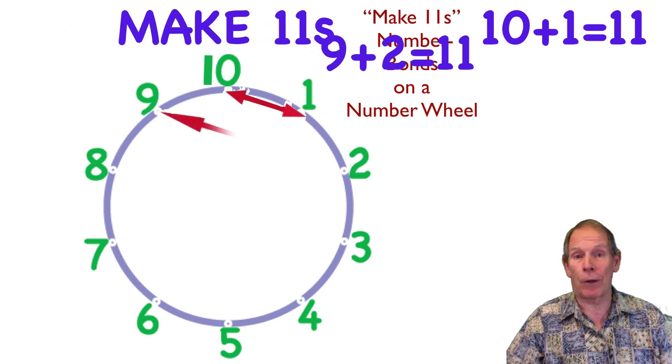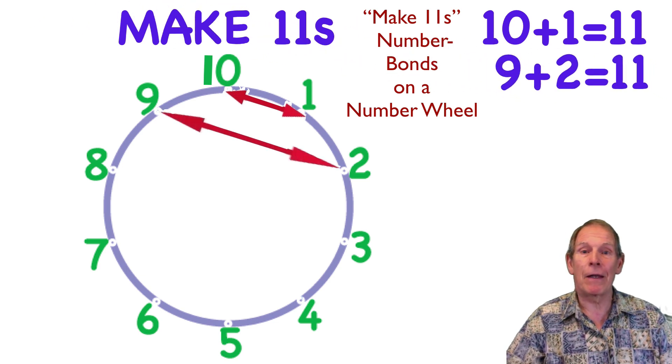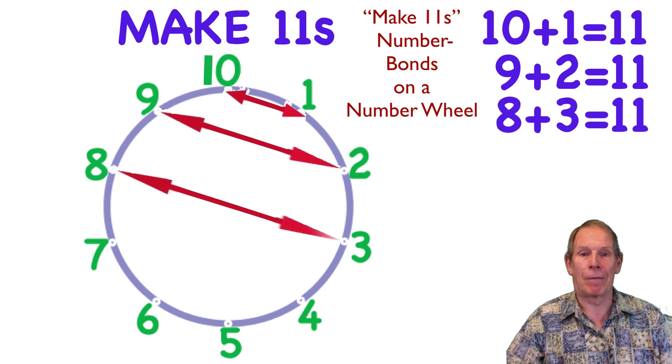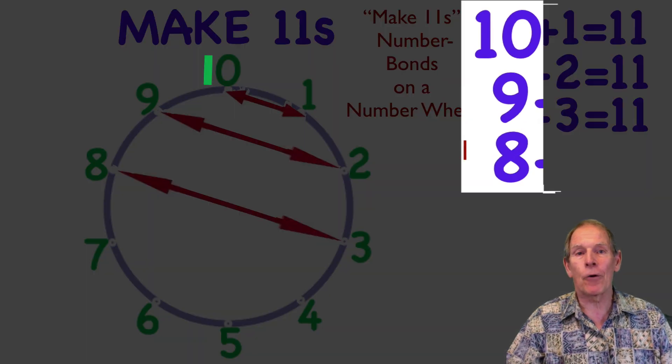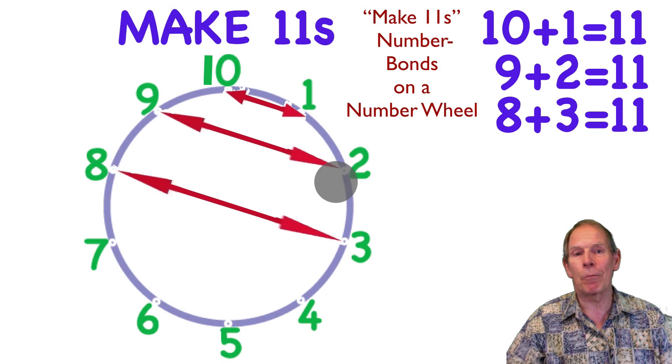And then as we go down, 9 plus 2 is 11, and then 8 plus 3 is 11. Now, notice they're all parallel lines, and also the 10-9-8 gets smaller, and the 1-2-3 gets bigger.